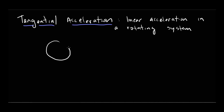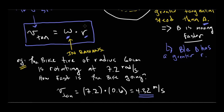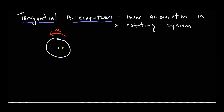If we had that merry-go-round again, and we think about a point on it — if this merry-go-round starts to spin faster and faster, meaning there's an angular acceleration alpha, then a person at that point is going to be moving faster and faster in the linear sense. There's a relationship between linear acceleration and angular acceleration, and just like before, it's all about the radius R. The tangential acceleration a_tan equals the angular acceleration alpha times R.